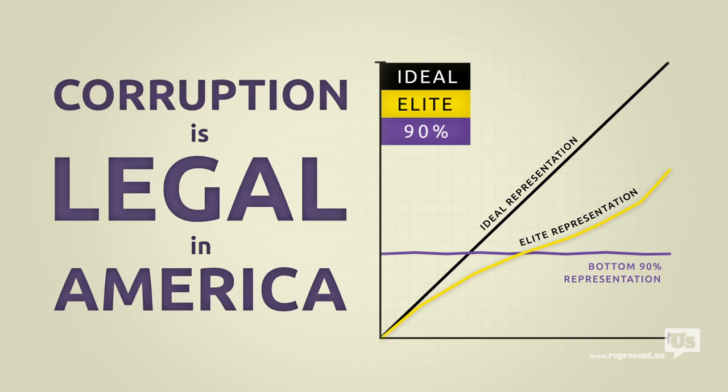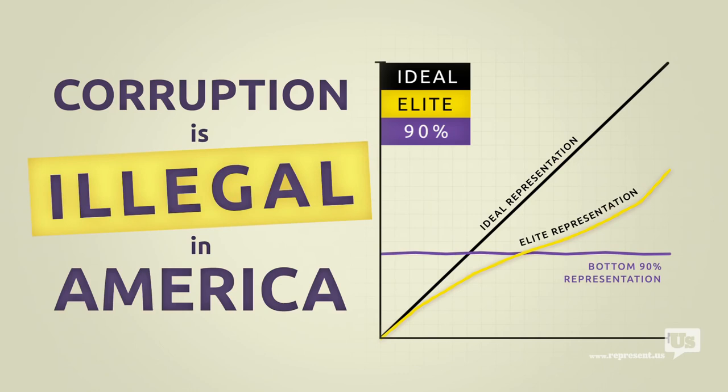The solution here isn't rocket science. Make corruption illegal. We already know Congress won't do it. I mean, one look at this chart will tell you that.